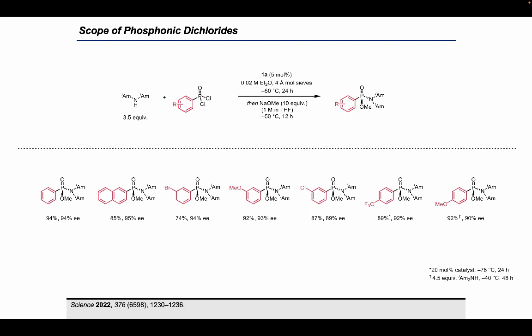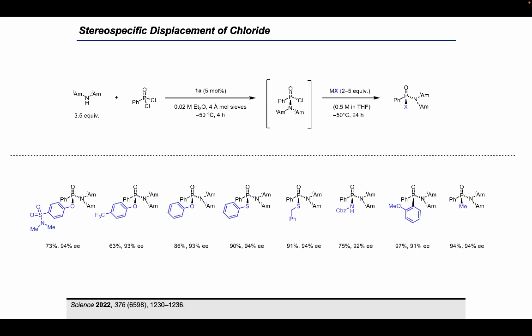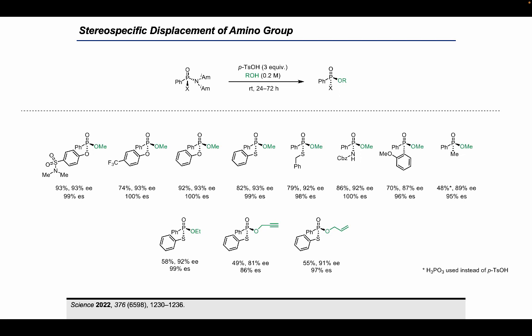We next explored the scope of nucleophiles that could displace chloride on these building blocks. The propensity of chloride to undergo nucleophilic displacement allowed a broad variety of substituents to be installed in this step, with virtually every nucleophile we tried reacting with near-perfect enantiospecificity, including phenoxides, alkyl aryl sulfides, deprotonated carbamates, and Grignard reagents. This aspect of the chlorophosphonamidate building blocks allows for the most diversity in the scope of products accessible using this method.